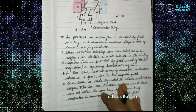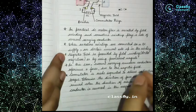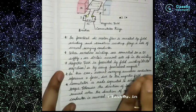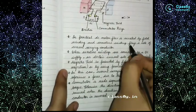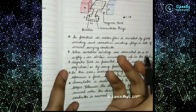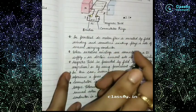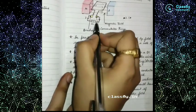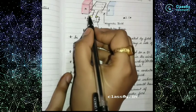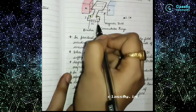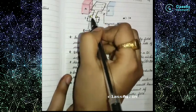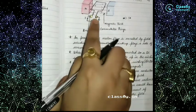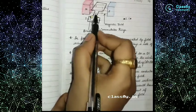In a practical DC motor, flux is created by the field winding, and the armature winding plays the role of the current-carrying conductor. The DC current has higher potential on one side and lower on the other. The commutator ensures the direction of current does not change as the armature rotates, so it behaves as a unidirectional device.